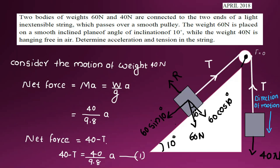The net force equation for the first body (40 N hanging) is: 40 minus T equals mass times acceleration. Using Newton's second law, mass equals W divided by g, so: 40 minus T equals 40 divided by 9.8 times A. This is equation number one, for the first body.